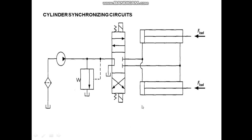The first arrangement to achieve synchronization is to connect multiple cylinders in parallel. We have two double-acting cylinders connected in parallel. Port A is connected to the blank end of cylinder 1 and cylinder 2, and port B is connected to the rod end of cylinder 1 and cylinder 2 at the same time. Let us see the working of this circuit.